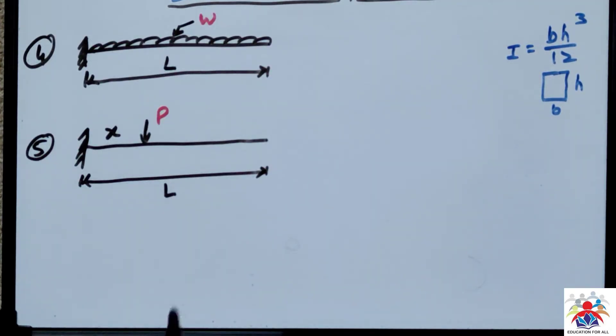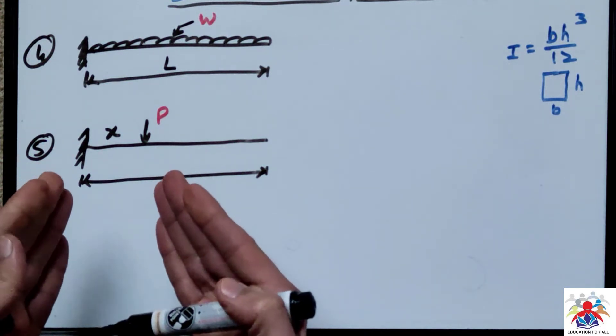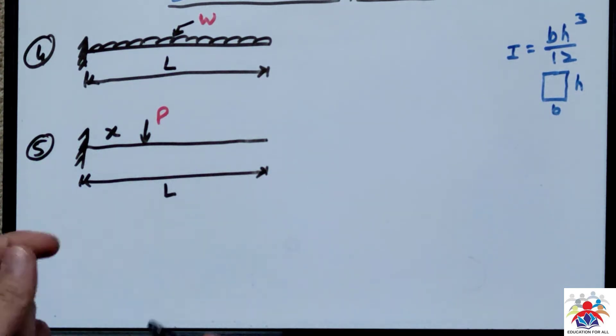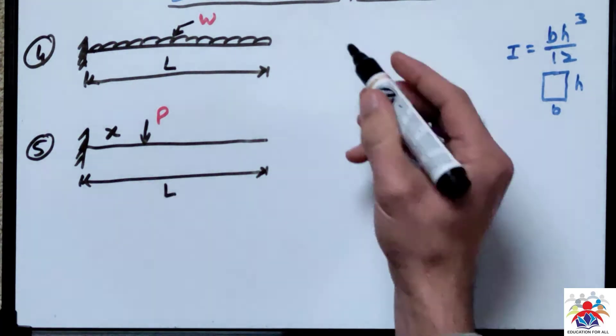The other types of beam are cantilever beam with the UDL on its entire length and a cantilever beam with a point load at some distance of the beam. So it's not in the middle, it's at some distance, the distance of x.